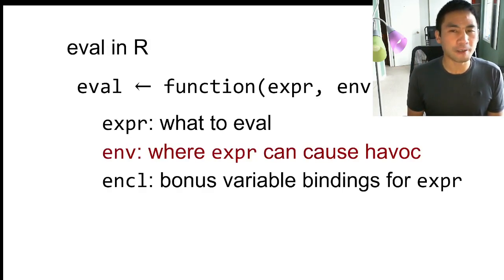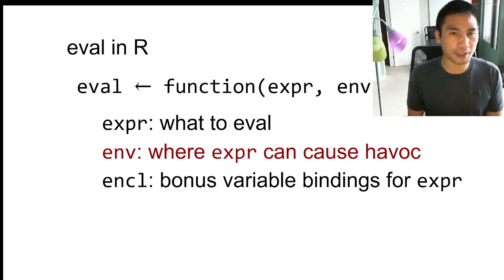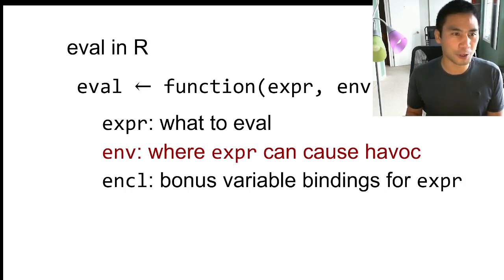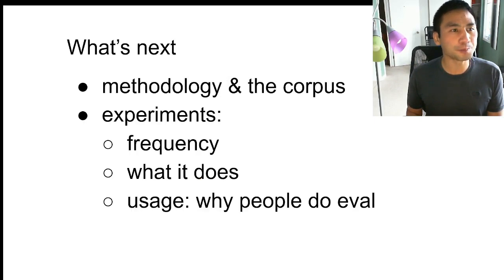Eval is a function in R with three parameters: an expression to evaluate, an environment where the expression can cause havoc, and ENCL — an enclosure with bonus variable bindings. This is what makes eval in R worse than corresponding constructs in Java or JavaScript. If the environment doesn't have enough bindings, you can pull more from the enclosure, and you can also change that.